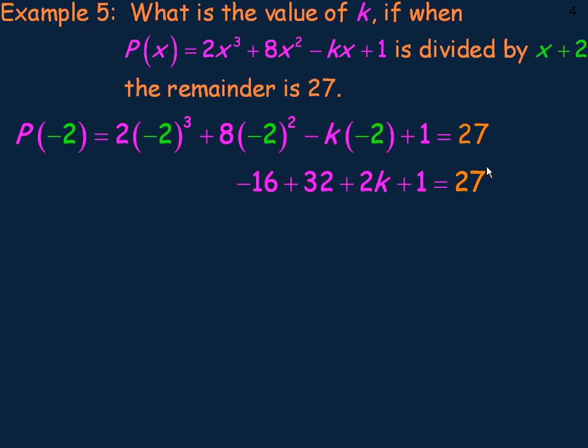We subtract 17 from both sides then. We get just 2k on the left. 27 minus 17 would be 10. Dividing out the 2, we get k to be 5. So k would have to be 5 in order for when we divide this by x plus 2 to get a remainder of 27.